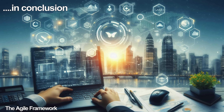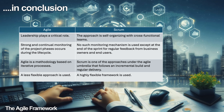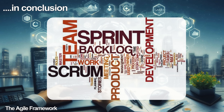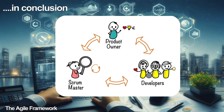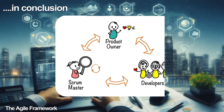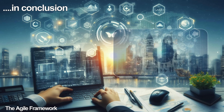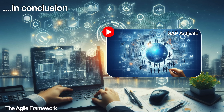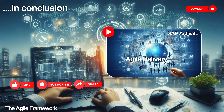We have come to the end of the video on the Agile Framework. In this video, we covered the Agile approach and Scrum framework, and touched on Scrum terminology such as burndown charts, Epics, and more. We learned about the roles of the Scrum master, product owner, and development team, as well as the various Scrum ceremonies and the product backlog and how to build it. In the next video, we will delve into understanding Agile delivery. Please let us know in the comments what you think and what you would like to see. Don't forget to like, subscribe, and share, and turn on notifications so you know when the next video drops.